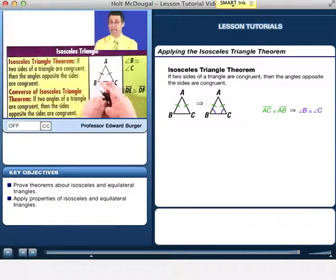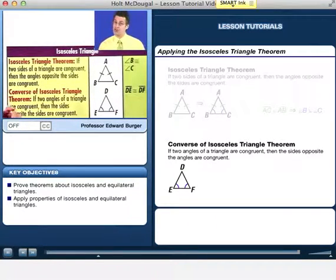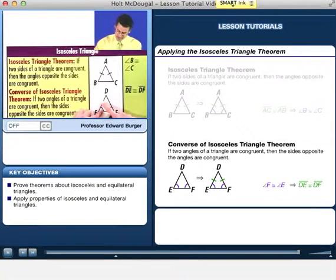And the converse of the isosceles triangle theorem also is a theorem, and that states that if two angles of a triangle are congruent, then the sides opposite the angles are congruent. So if you have two angles and you know they're congruent, then in fact the sides that are opposite they will be congruent as well.